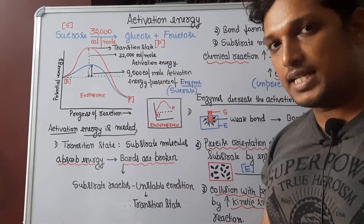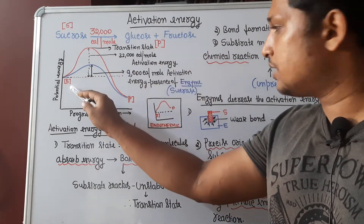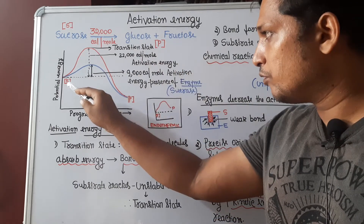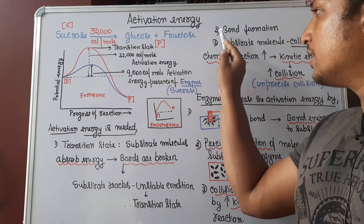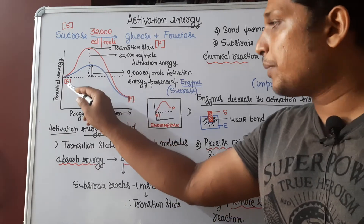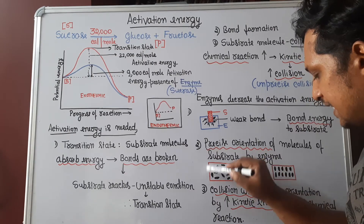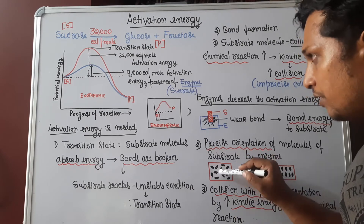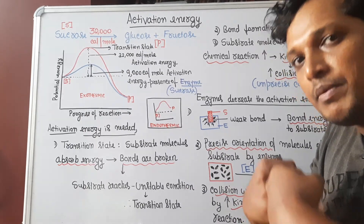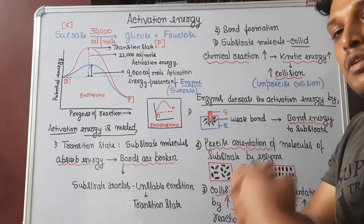The second reason activation energy is required is that the product will have new bonds in it, so energy is needed to break old bonds and form new bonds in the product. The third reason is that substrate molecules are not precisely arranged, and these molecules must undergo collision. When there is collision between reactant molecules, the chemical reaction will be greater, and obviously product formation will be faster.